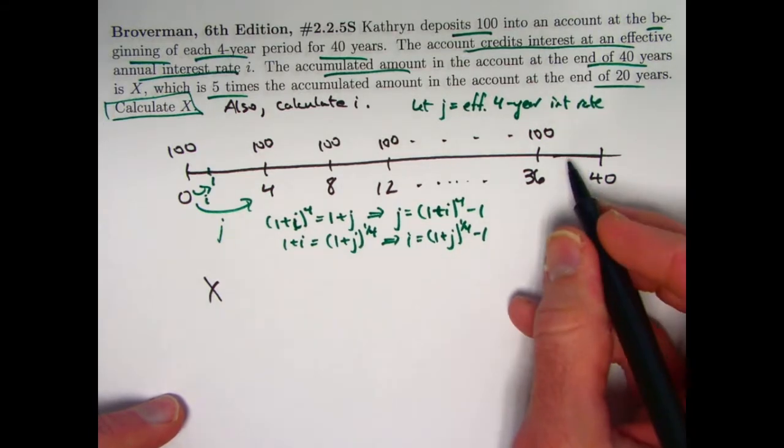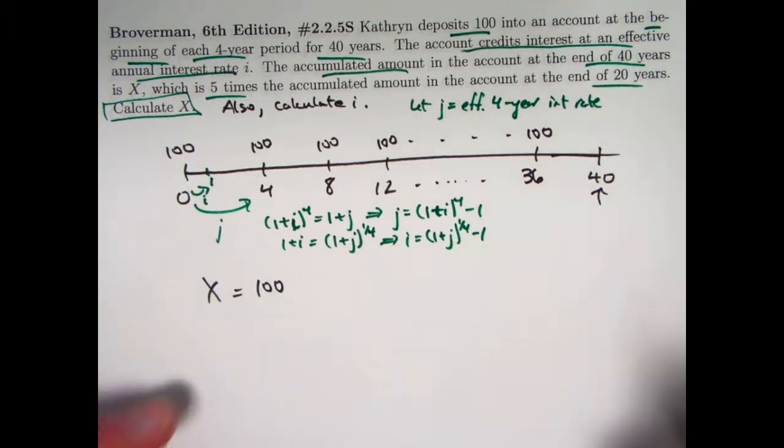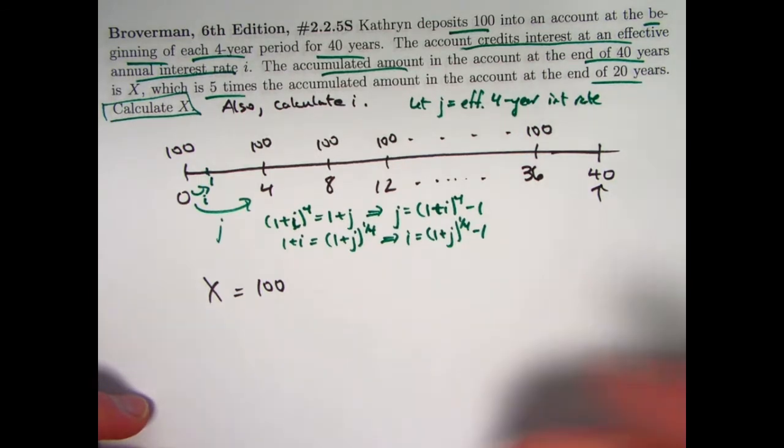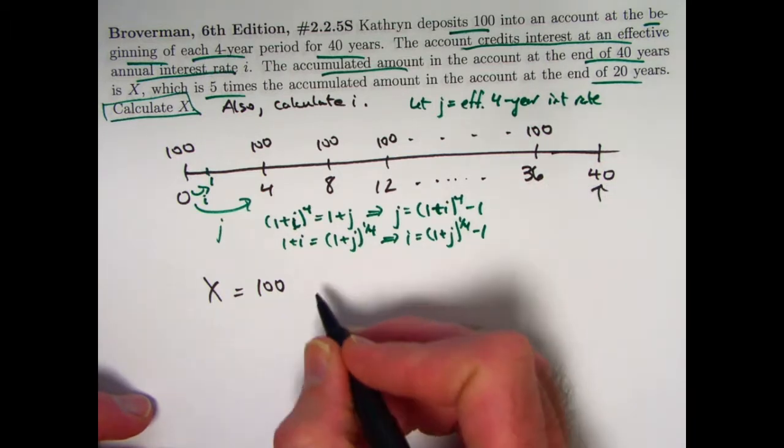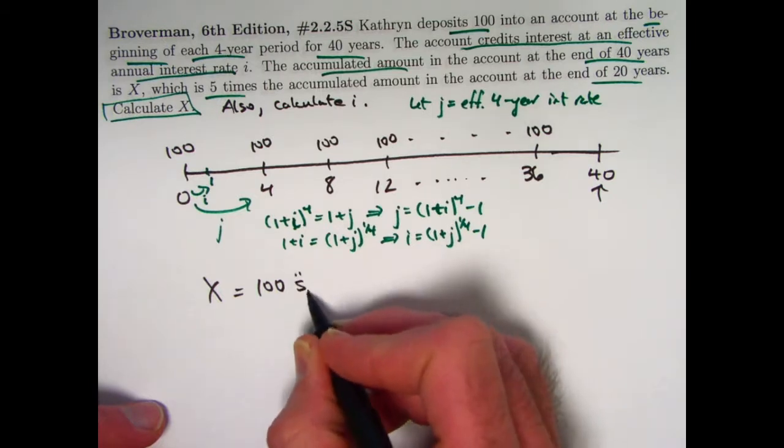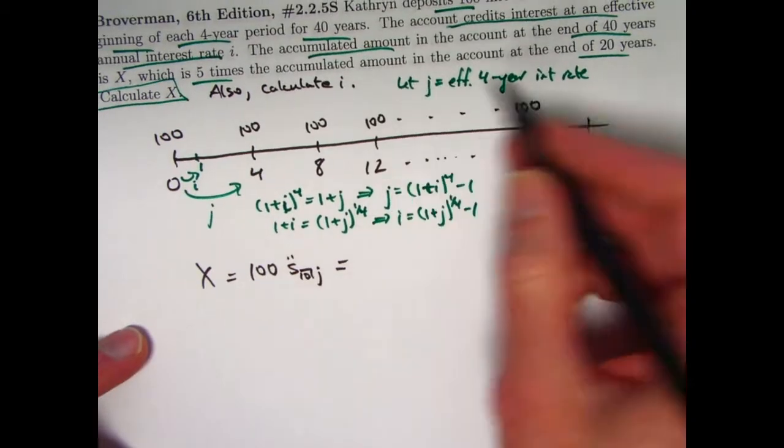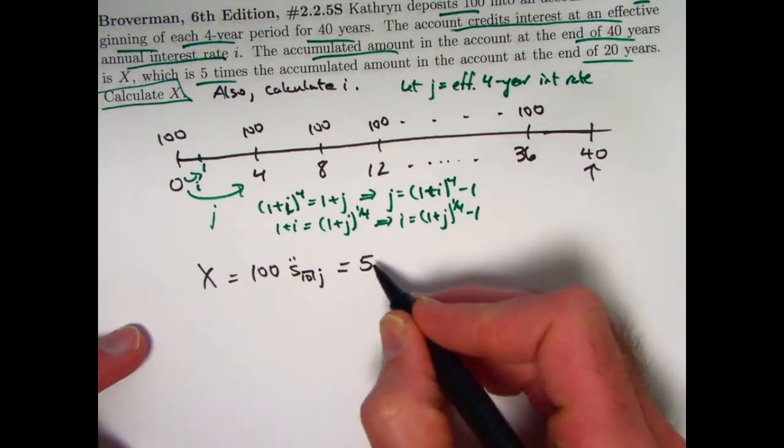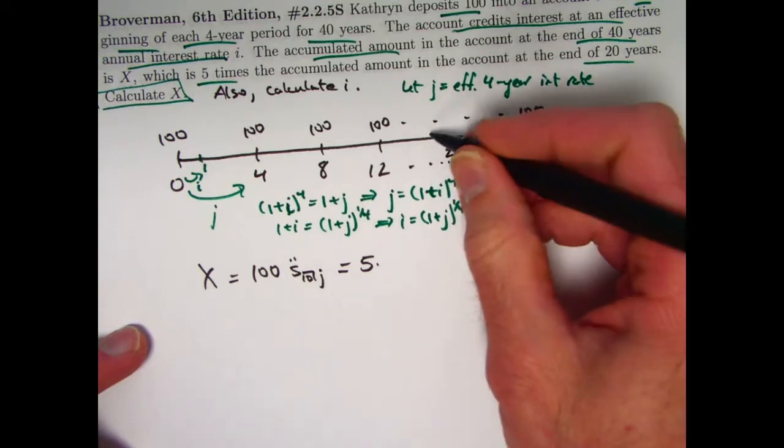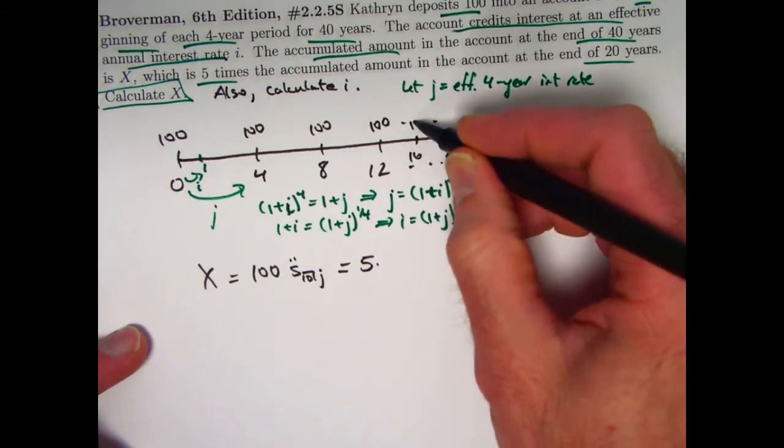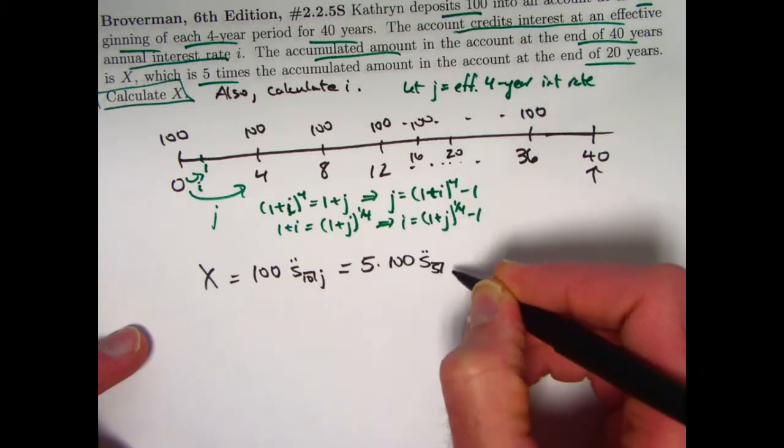x is the accumulated amount after 40 years, at the end of 40 years, at time 40, of this annuity that's paid. That's 100 deposits. The amount is 100. There are 10 deposits total. It's evaluated four years, one period for j after the last deposit. So it's an annuity due, s double dot, 10 payments with interest rate j. That equals five times the accumulated amount at the end of 20 years. This equals five times the value at time 20 of the first five payments, starting at time zero and going through time 16. Five times 100 s double dot five payments at interest rate j.